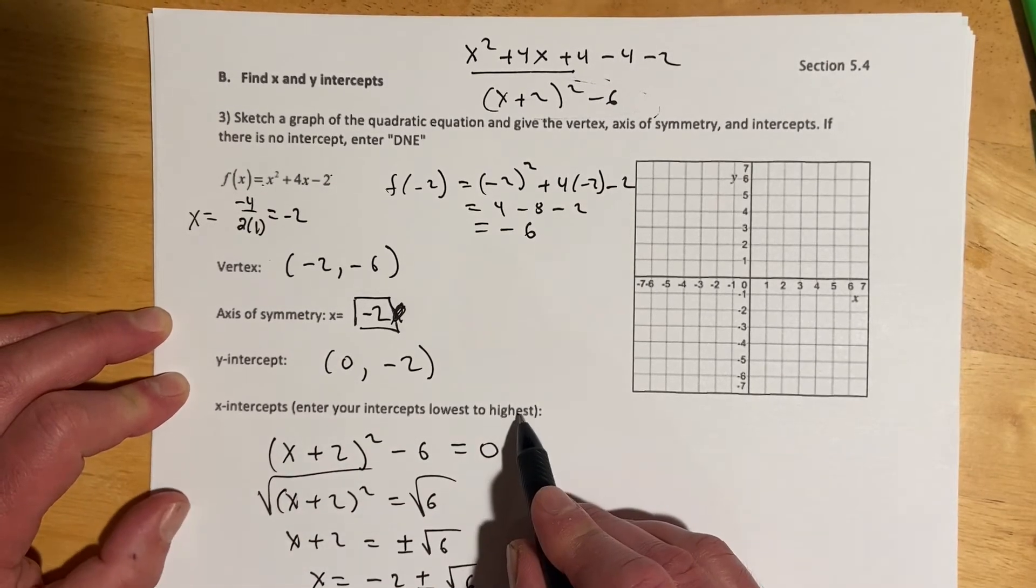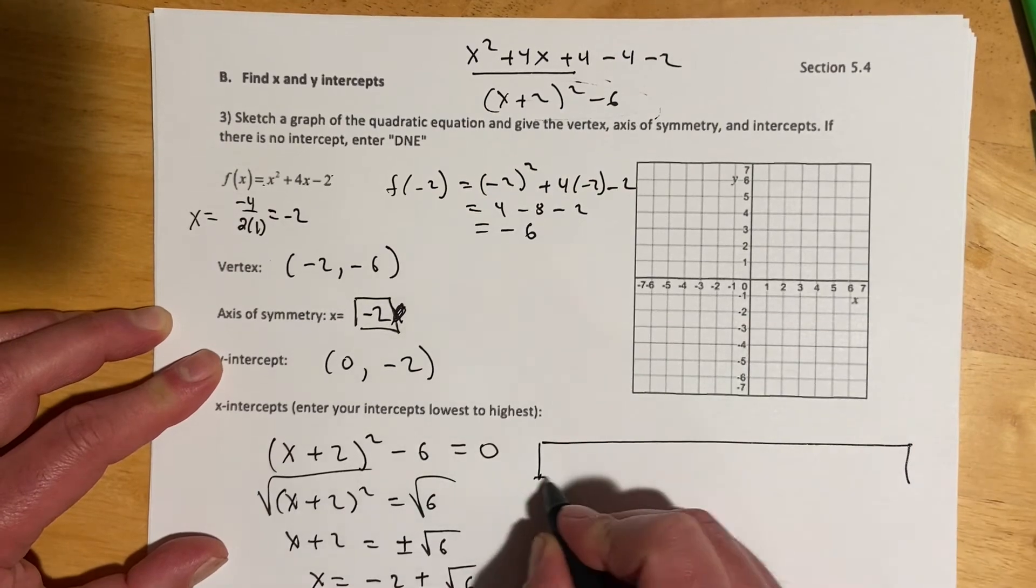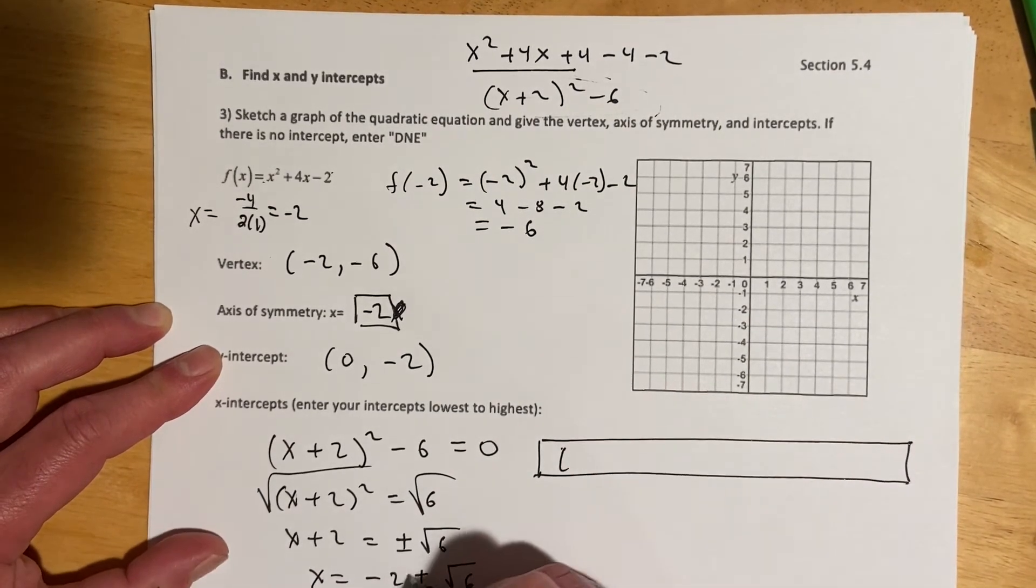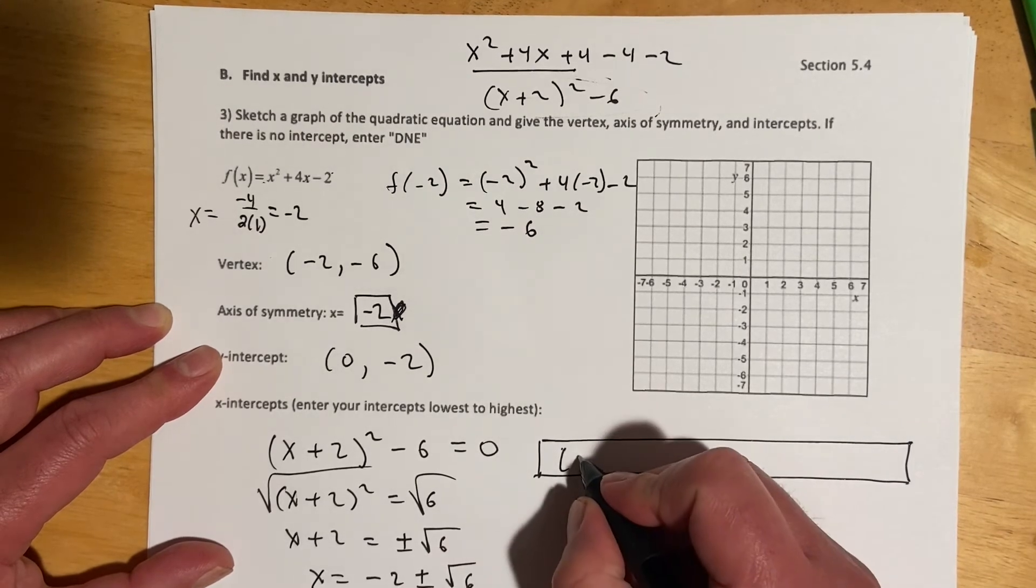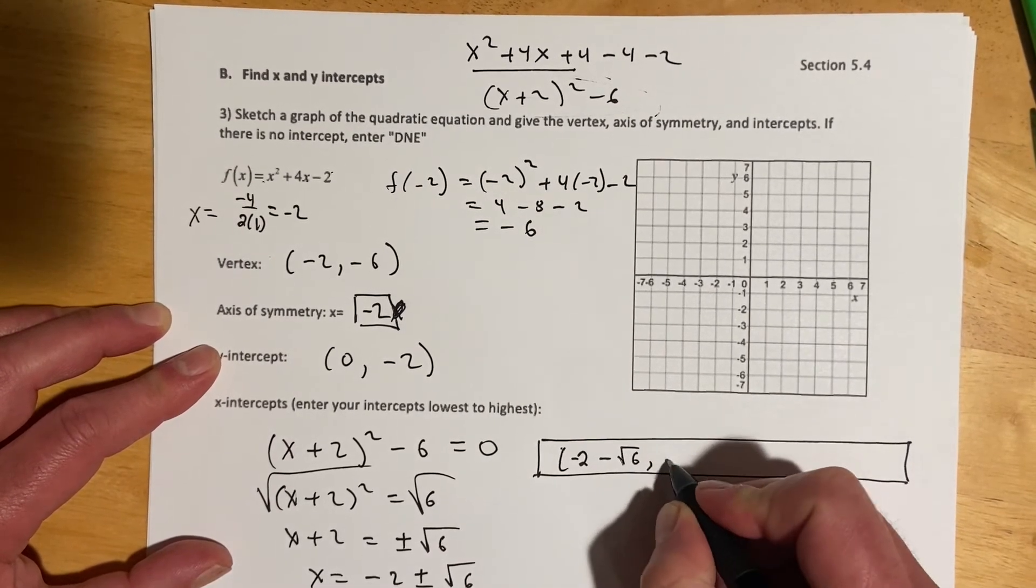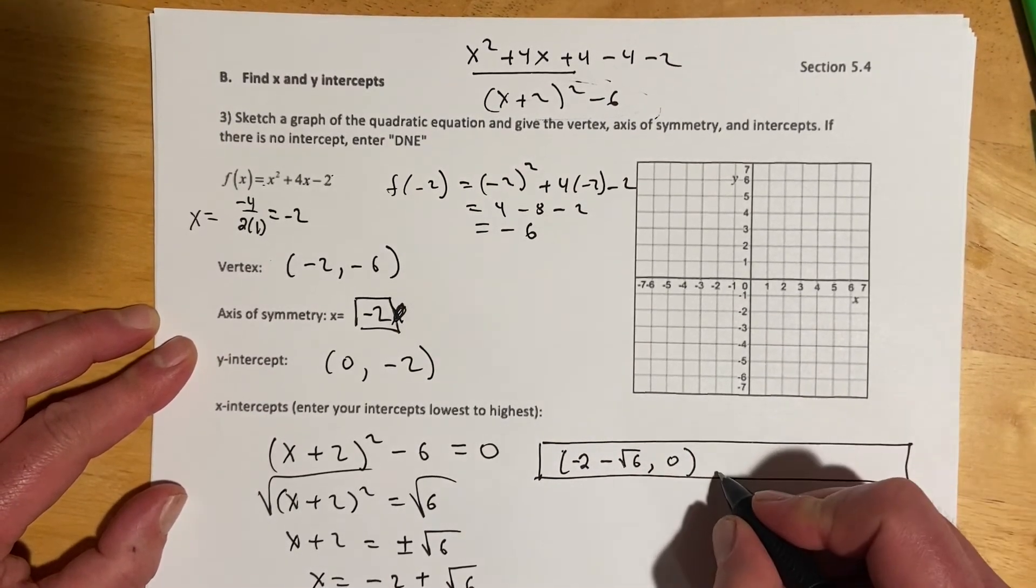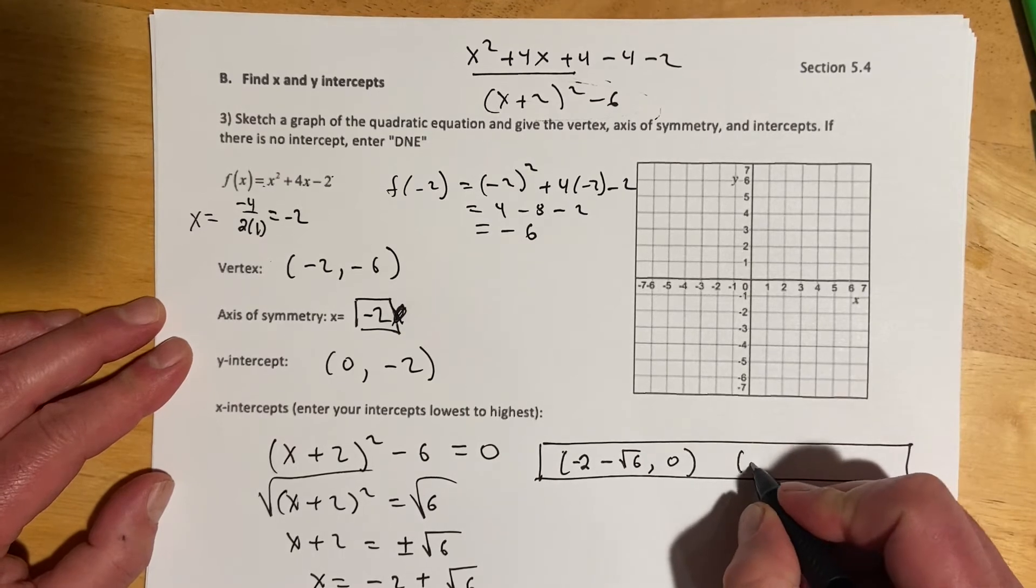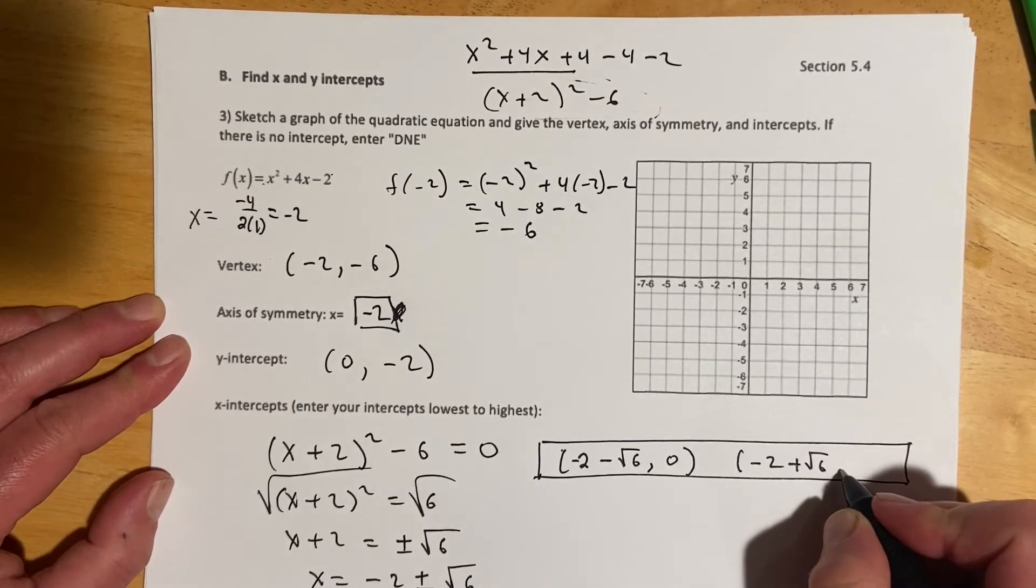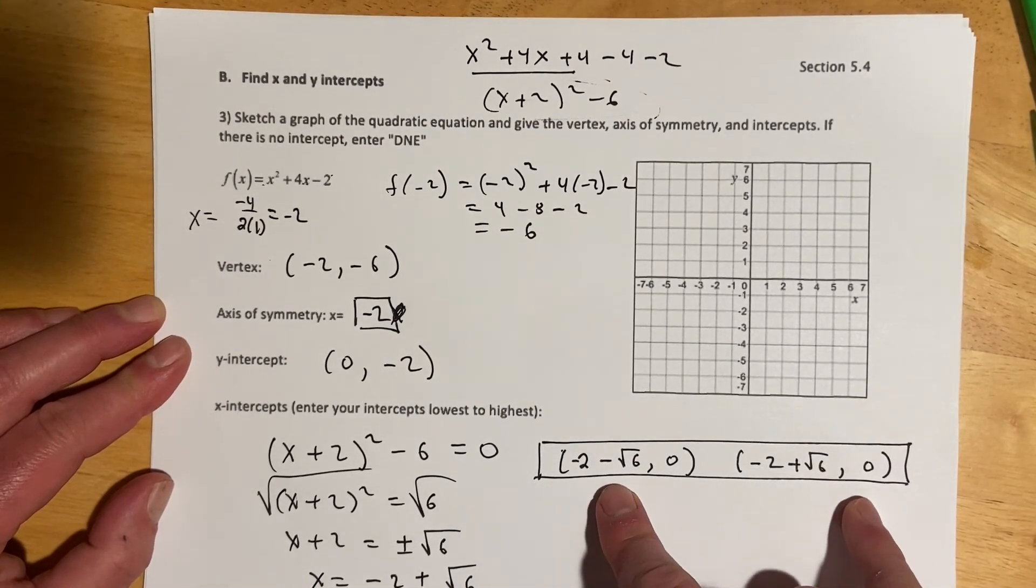So, the way that this one should enter the answers, highest to lowest, is just going to be like a big box. And it's looking for ordered pair, and the lowest one is going to be the x's negative 2 minus root 6 in this case, comma 0, because that would be your first x-intercept. And then, negative 2 plus root 6, that's your second x value, comma 0. So, that answer entry is a little bit tricky.